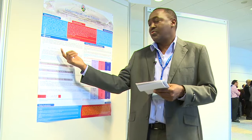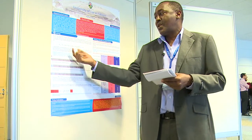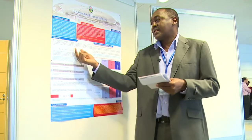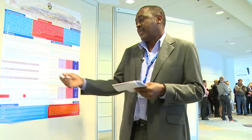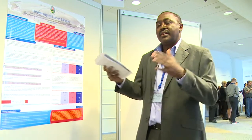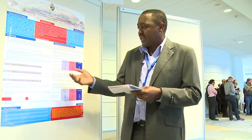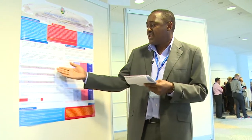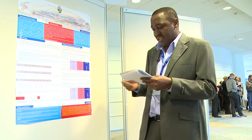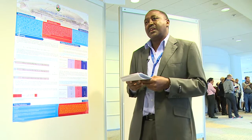We decompose the change in poverty between two periods into three main elements: the growth effects, the redistribution effects, and the residual. This methodology answers two main questions. First, what would have happened to poverty if we hold inequality constant and change the mean income? Second, what would poverty levels have been if the distribution of income had changed without any change in mean income?